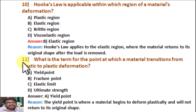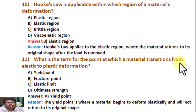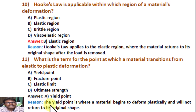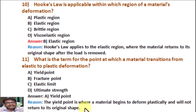Question number 11. What is the term for the point at which a material transitions from elastic to plastic deformation? Option A: Yield point. Option B: Fracture point. Option C: Elastic limit. Option D: Ultimate strength. Correct answer is A, Yield point. Reason: The yield point is where a material begins to deform plastically and will not return to its original shape.